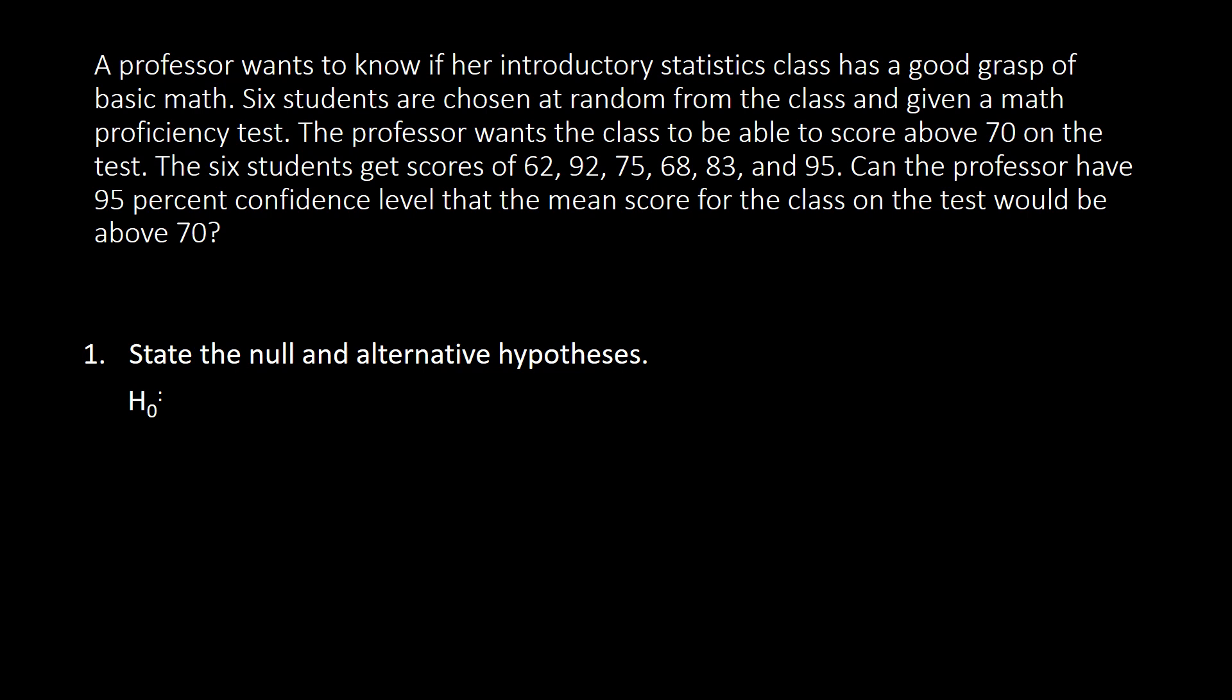Now the null hypothesis for this one is going to be mu, that will be equal to, according to this one, he wanted to have a 70 on the test. So we need to say that the average here could be 70.